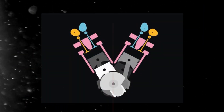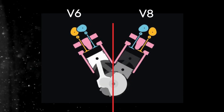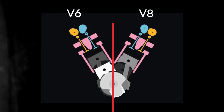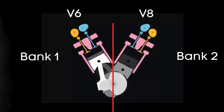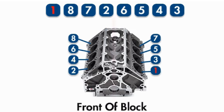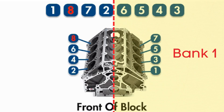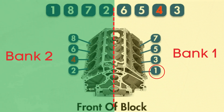In engines with multiple cylinder banks, like V6 or V8 engines, you'll have two sides or banks of cylinders. Bank 1 typically refers to the side of the engine where cylinder 1 is located, and bank 2 is on the opposite side.